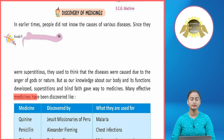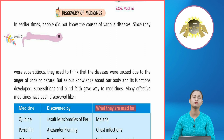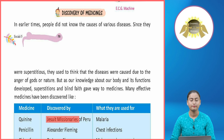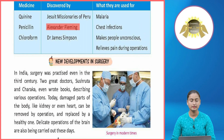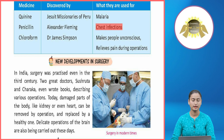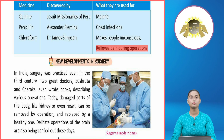Many effective medicines have been discovered. Quinine, discovered by Jesuit missionaries of Peru, is used to cure malaria. Penicillin, discovered by Alexander Fleming, is used for chest infections. Chloroform, developed by Dr. James Simpson, makes people unconscious and relieves pain during operations — so that patients do not feel pain during surgery.